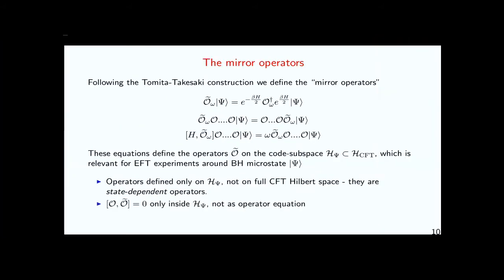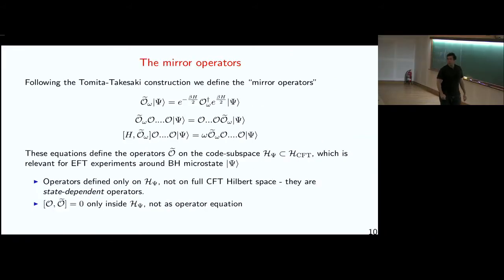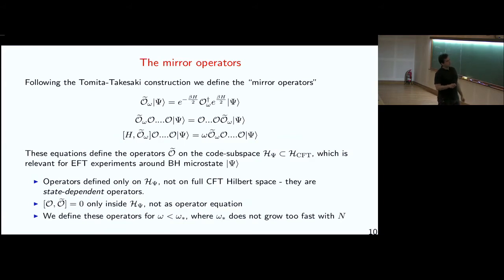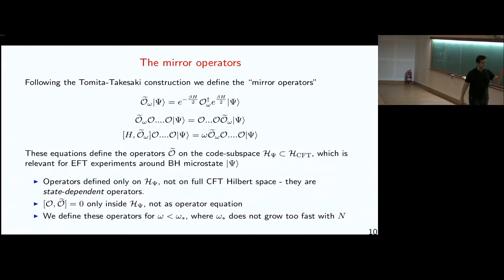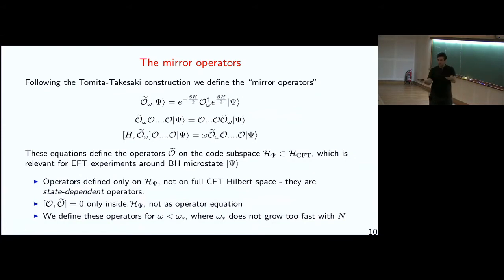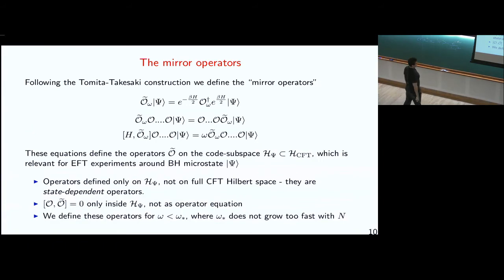Even though the equations seem to imply that O and O-tilde commute, this equation is true only inside the small subspace, not as a fundamental operator equation on the full Hilbert space. I want to define these operators only for frequencies with an upper cutoff that I will call omega_star. This omega_star can be very large, but we don't want it to grow too fast with N. The motivation for this cutoff is that the entire construction is based on the idea that the small algebra seems to be thermalized. When you look at thermal occupation levels at very high frequency, they go to zero very quickly — those modes seem to be in the ground state, and the construction becomes very difficult. So we impose conditions only for frequencies bounded from above by omega_star. This will be related to the cutoff of the left region I introduced in the previous slide.